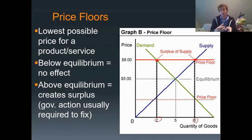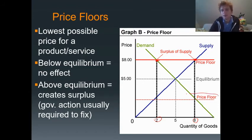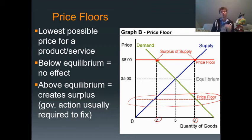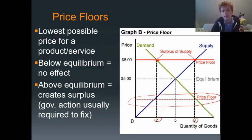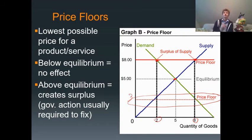Now if you put a price floor below equilibrium, it says the price can't go below that level — but the market doesn't want to be below that price anyway. The market wants to be at equilibrium, say five dollars, not down at three. So if you put a price floor below equilibrium, it won't be effective because the market already wants to be above that price.